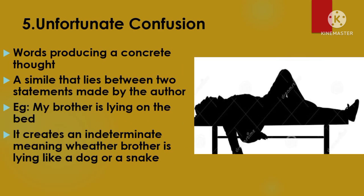The fifth type of ambiguity is called unfortunate confusion — when we cannot express accurately or define words producing a concrete thought. Empson describes a simile that lies halfway between two statements made by the author. For example, in the sentence 'My brother is lying on the bed,' it gives the reader a confused picture, as if the brother is lying like a dog or a snake on the bed. The dog or snake creates an unfortunate confusion.